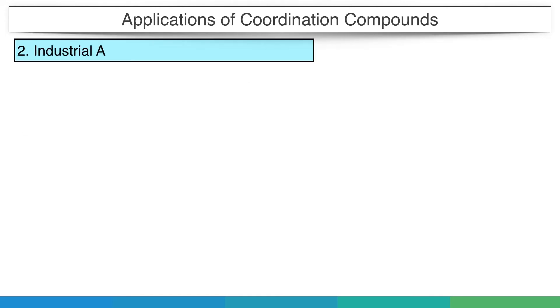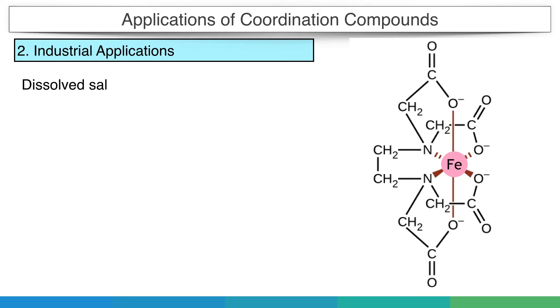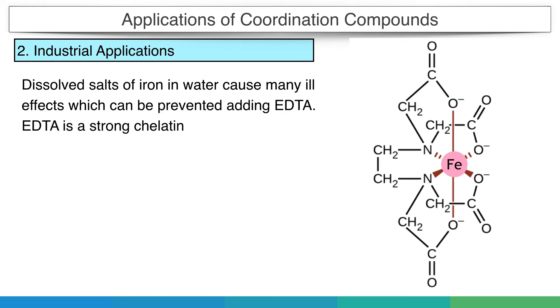Second, industrial applications. Dissolved salts of iron in water cause many ill effects, which can be prevented by adding EDTA. EDTA is a strong chelating agent.